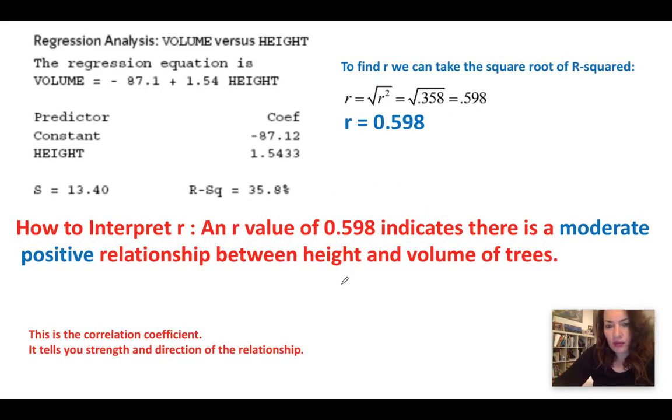The next thing we want to interpret is r. So r is our correlation coefficient. It tells us the strength and the direction of the relationship. We are not given r here, but what we are given is r-squared. We know from algebra, in order to get r, we can take the square root of r-squared. So to find r, we can take the square root of r-squared, and that gives us about 0.598.